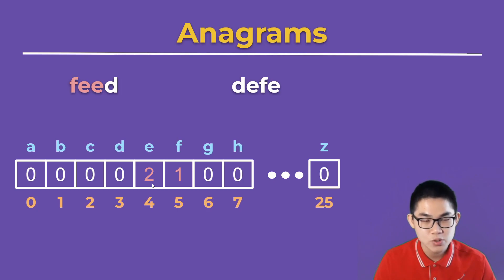E again, this becomes 2. And D, this becomes 1. Now we go through the second word.